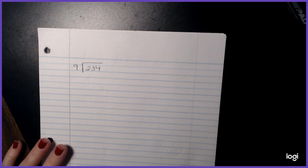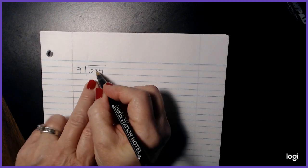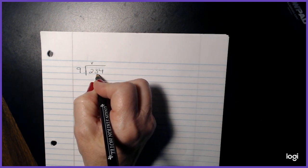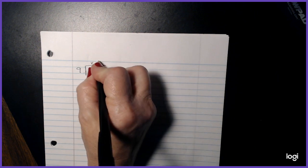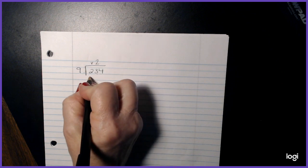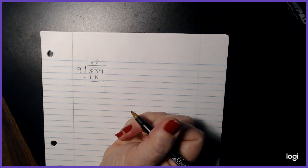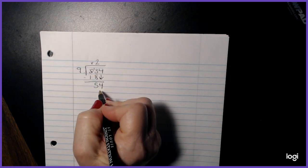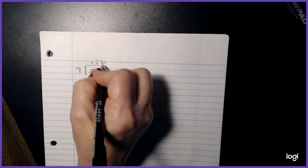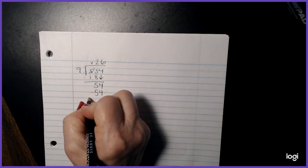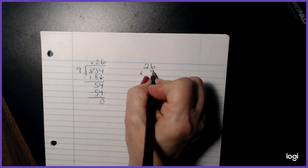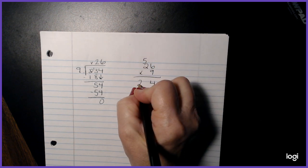So if you did not have time to go ahead and finish, pause this unless you would like to go ahead and follow along. So nine cannot go into the number two. So I put a placeholder here above the two. Nine into 23. If I look at my multiplication chart, nine can go into 23, two times. Nine times two is 18. And I'm going to subtract. Nine times what goes into 54, and six. My final answer is 26.